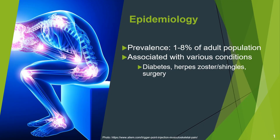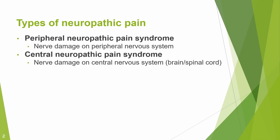The prevalence of neuropathic pain is about 1–8% of the adult population. Neuropathic pain is associated with various conditions such as diabetes, herpes zoster or shingles, or surgery. There are two types of neuropathic pain: peripheral neuropathic pain syndrome and central neuropathic pain syndrome.